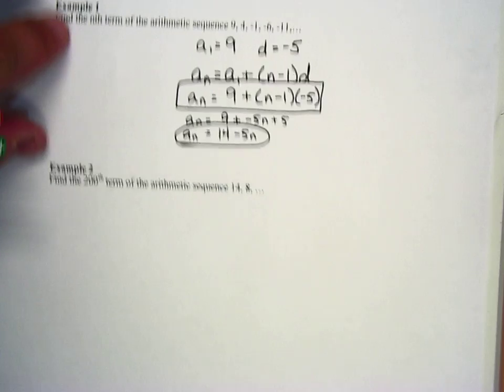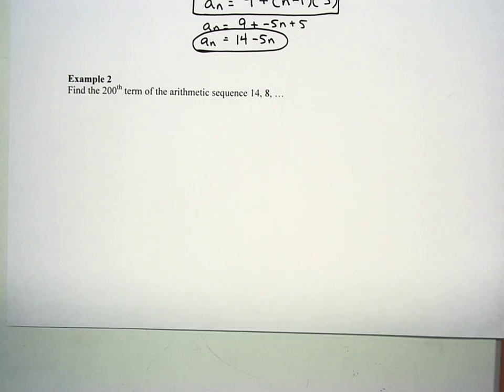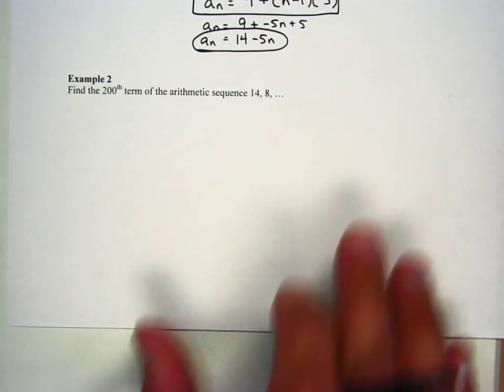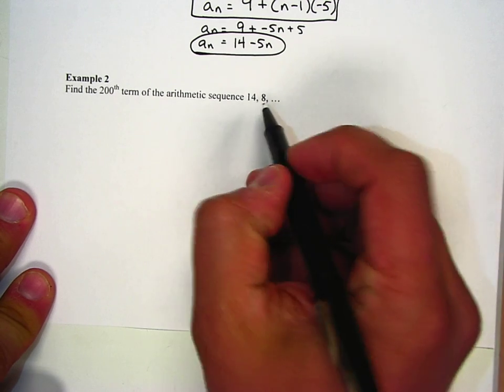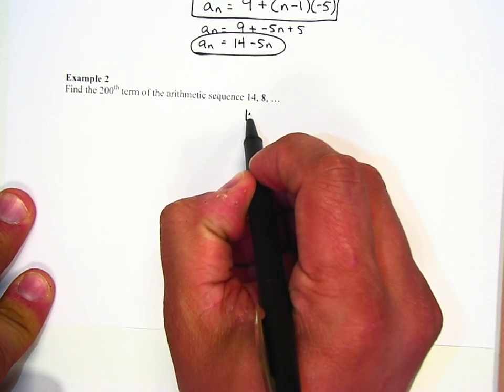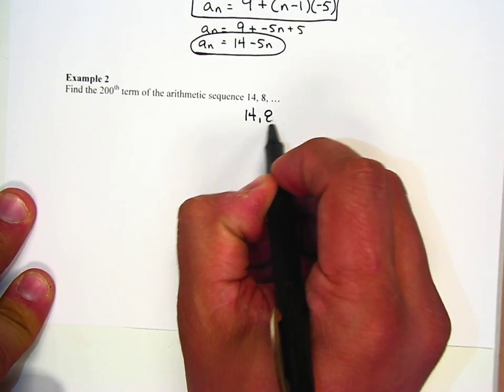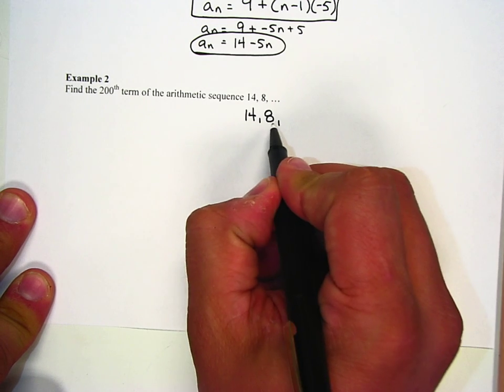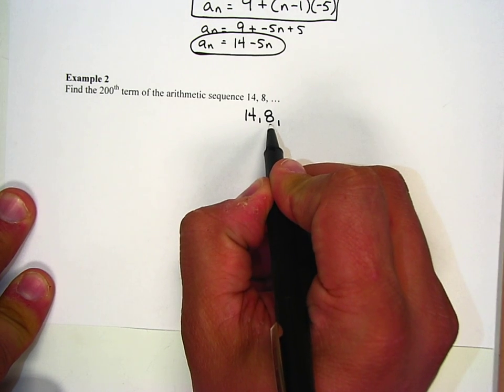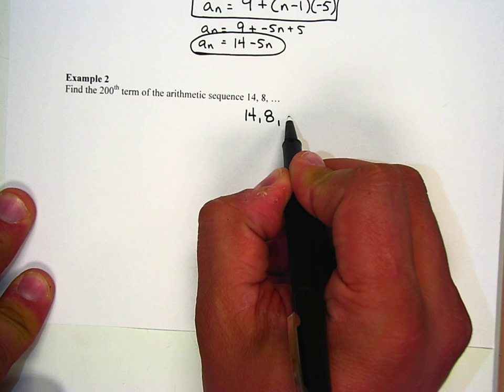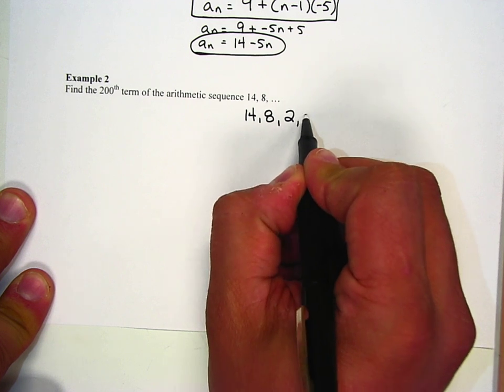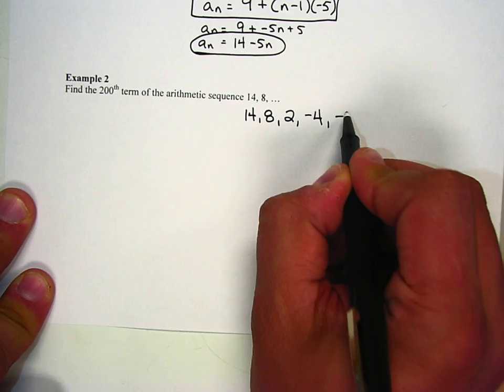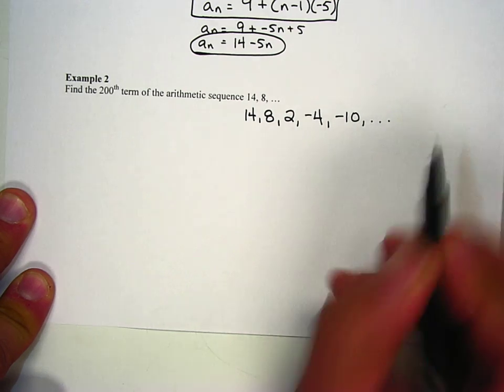Let's look at example number two now. Find the 200th term of the arithmetic sequence 14, 8, and then it leaves us off as dot, dot, dot. Now what we want to do probably is just give us a couple more terms. 14, 8. I subtract 6 there. So if I subtract 6 again, I'm going to get 2, negative 4, negative 10.